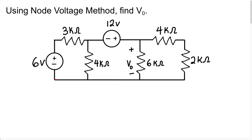Now that we have labeled our reference node, we have another node right here — I'm going to call this an essential node and label it as node 1. And we have another essential node right here, which I'm going to call node 2. Because we want to use the node voltage method, I would like to find the voltage at node 1 and the voltage at node 2.